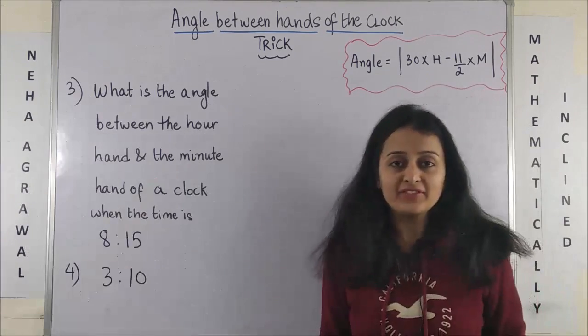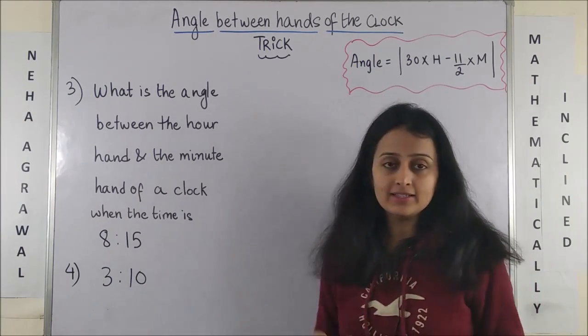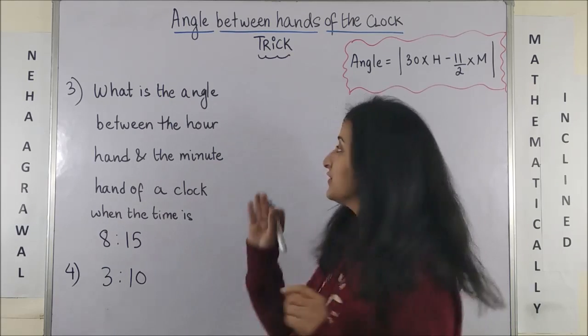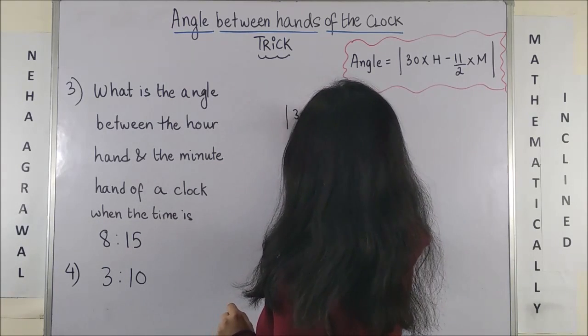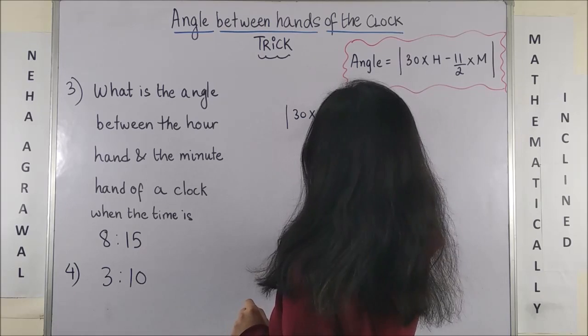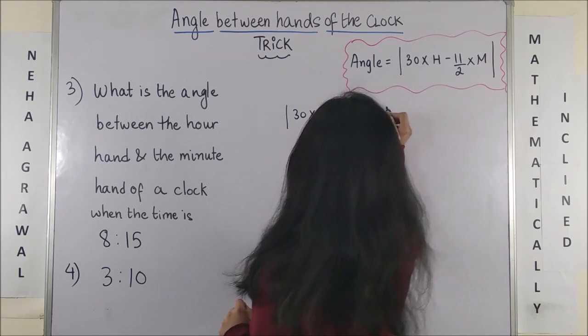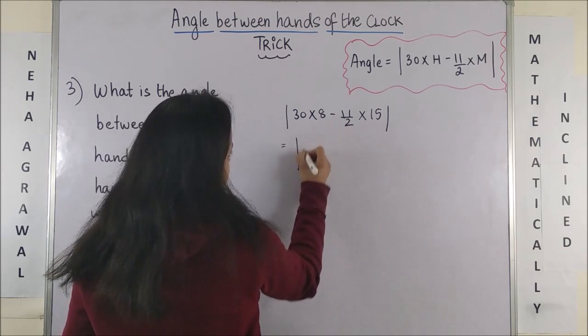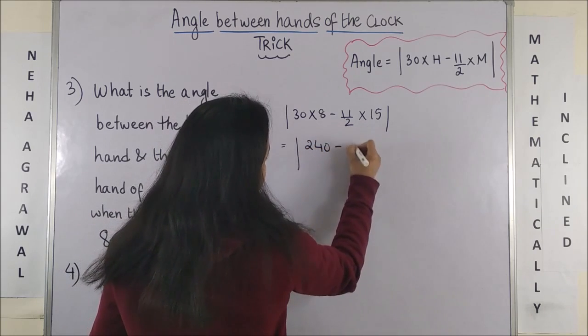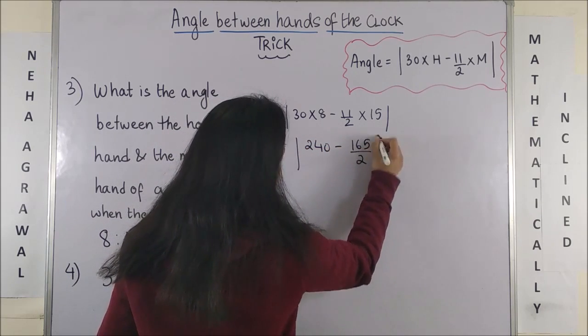Same way, I have the next two questions. So the angle when the time is 8:15 is obviously going to be 30 into 8 minus 11 by 2 into 15. Now this doesn't simply get cut. So you'll have to take the LCM and all. 240 minus 165 by 2.